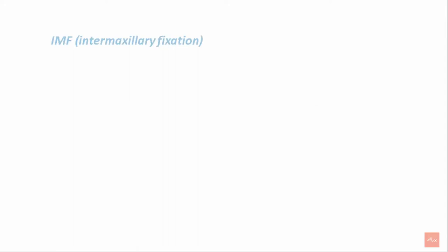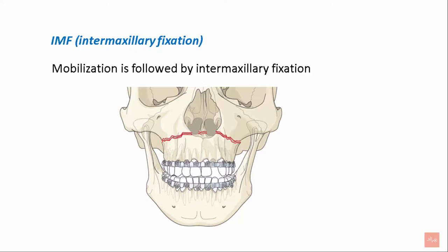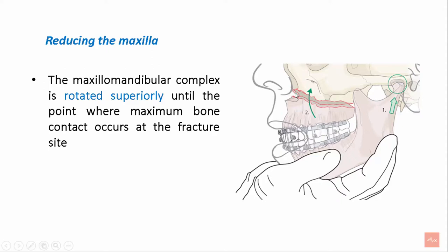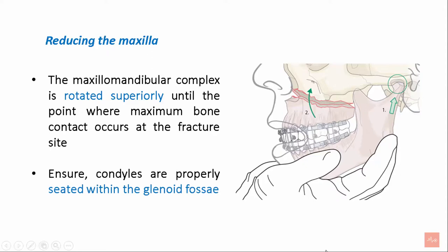Mobilization is followed by intermaxillary fixation, done through the use of arch bars. This is followed by reducing the maxilla: the maxillomandibular complex is rotated superiorly until the point where maximum bone contact occurs at the fracture site. Care is taken that the condyles are properly seated within the glenoid fossa.